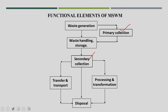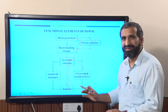Whatever waste is produced at the generation sources will go to the storage facility or dustbin location. After that, a bigger vehicle will collect the waste from the dustbin area, which will go to either the disposal site directly or to the processing site. We consider primary collection as collection services and there are different services we are going to discuss today. We also have different collection systems based on different kinds of dustbins, whether a haul container or stationary container.